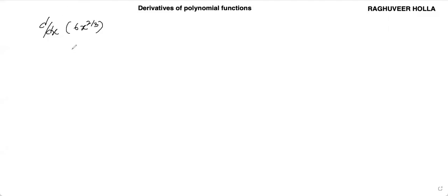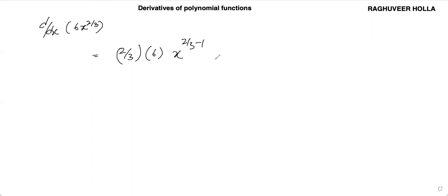Let us solve this problem. Here, 6 is the coefficient constant and the exponent b is 2 by 3. So it is 2 by 3 multiplied into 6, x to the power of 2 by 3 minus 1. After canceling, we get 4·x to the power of minus 1 by 2.